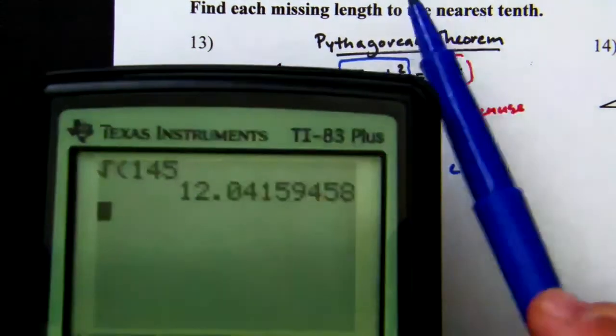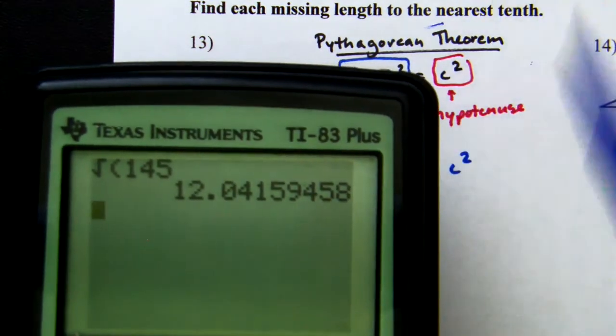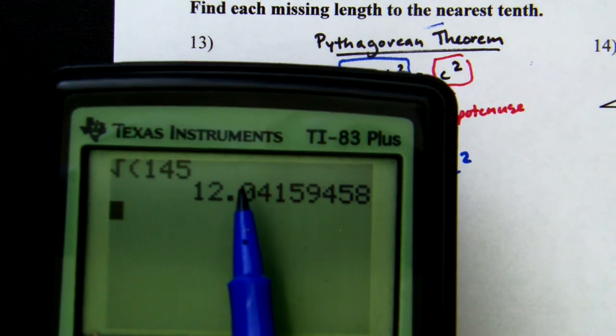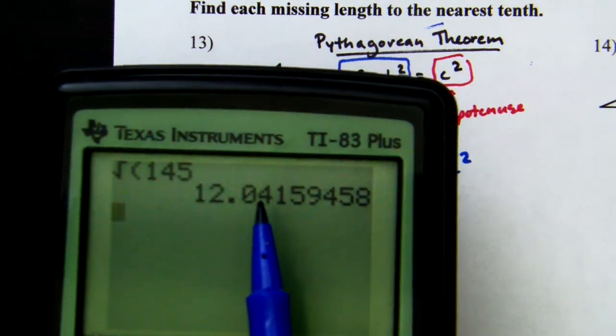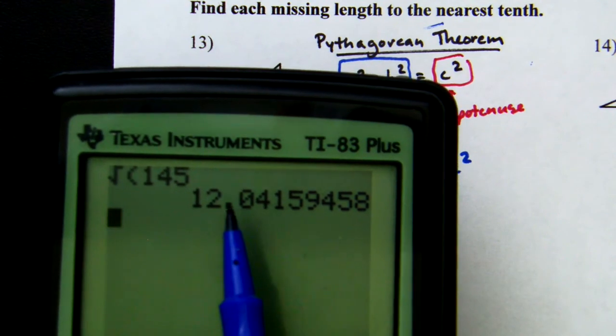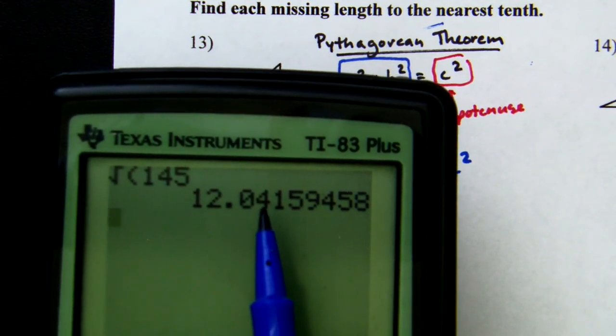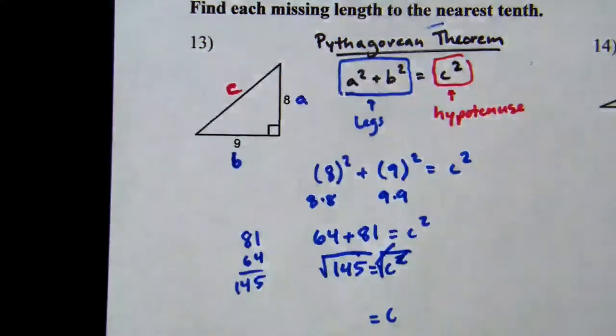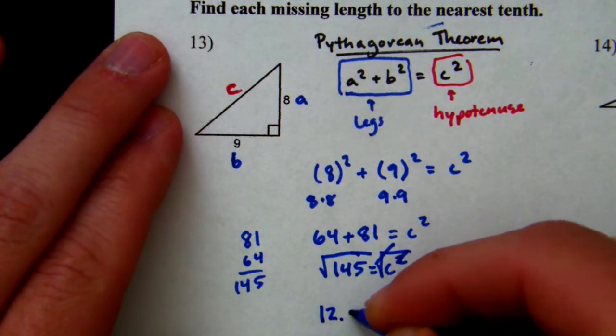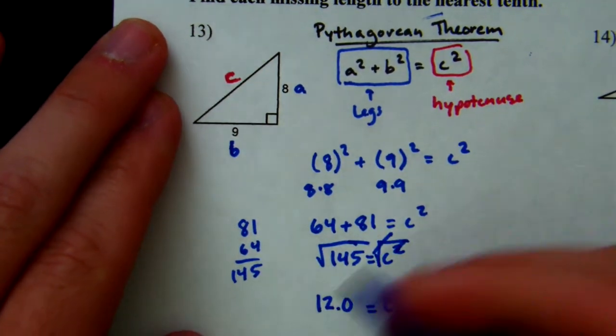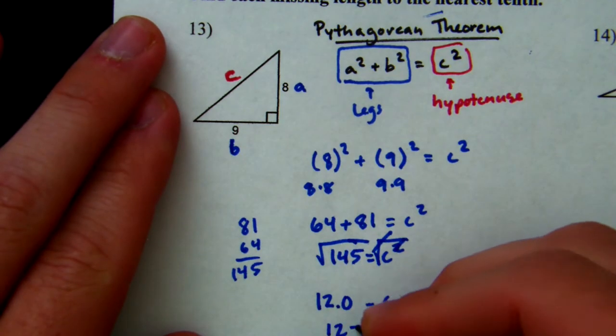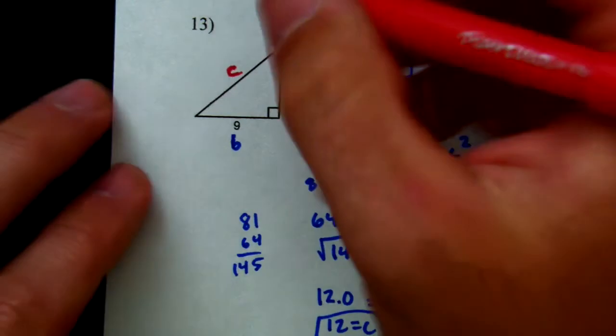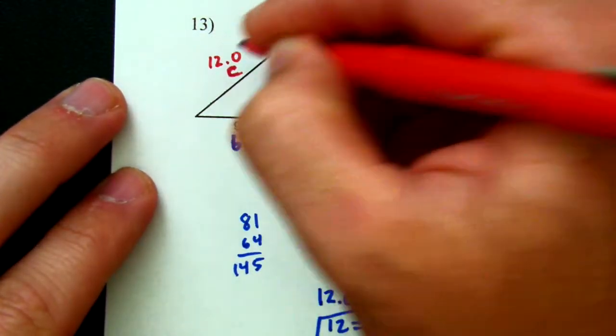Now, if we look at the directions, it says round to the nearest tenth. So the tenth is going to be the zero. I'm going to circle it. I'm going to look at the number that's next to it. If the number that's next to it is between zero and four, we keep it the same. If it's five or greater, we round up. This number next to it is four. It's less than five. So we're going to keep that number the same. So it is 12.0. You could say 12. That's totally fine as well. So c equals 12. So this number right here is going to be 12.0.